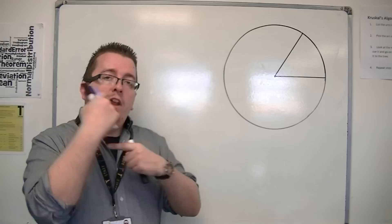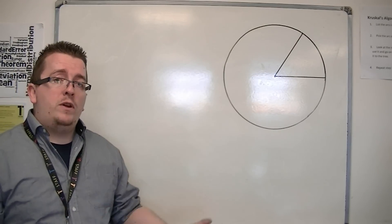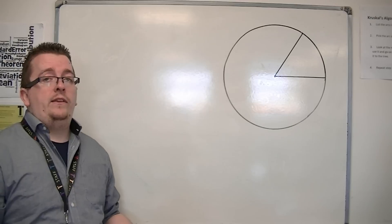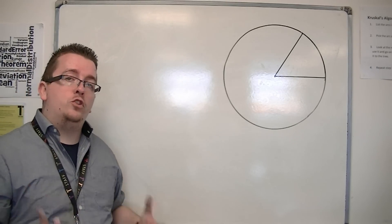So radians are another way of measuring angles. We have degrees and radians, and in many cases, from here on out, radians are much easier to work with than degrees.